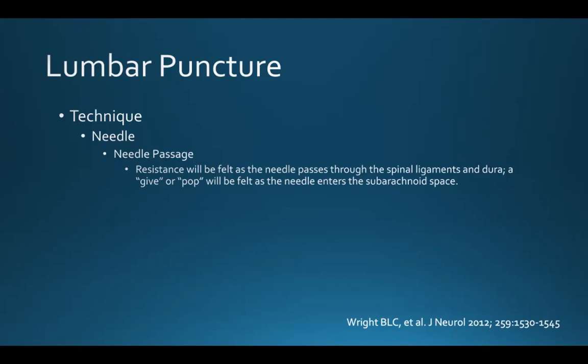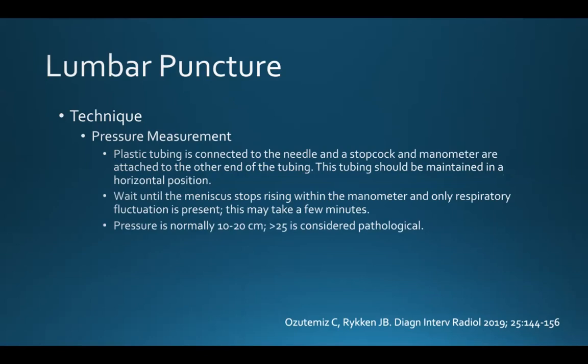As you're passing the needle, resistance will be felt as it passes through the spinal ligaments and through the dura. A give or a pop will be felt as the needle enters the subarachnoid space. Once the needle is in the right place, we often want to obtain an opening pressure. Plastic tubing is connected to the needle and a stopcock and manometer are attached. The tubing should be maintained in a horizontal position. Watch the CSF go into the manometer and wait until the meniscus stops rising and only respiratory fluctuation is present. This may take a few minutes.